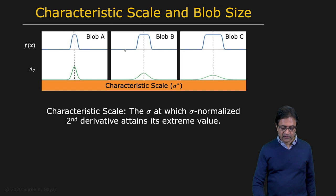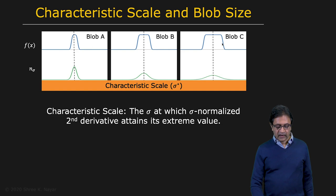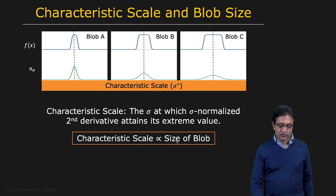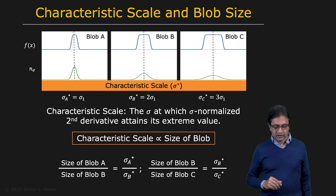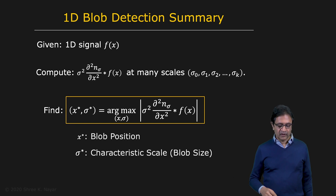So you're getting two pieces of information here. You're not just finding the blobs — you're also getting as a side product the size of the blob itself. This is called the characteristic scale corresponding to a blob. Different blob widths — width one, width two, width three — give you characteristic scales proportional to the size of the blob. In this particular case, for blob A you get sigma one, for blob B you get exactly two times sigma one, and for blob C you get three times sigma one.